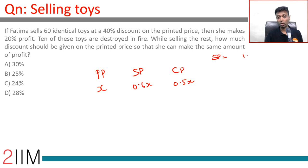Selling price should be 1.2 times cost price, so if this is 0.6x, that is 1.2 times cost price, or cost price is 0.5x, which is what we got here.